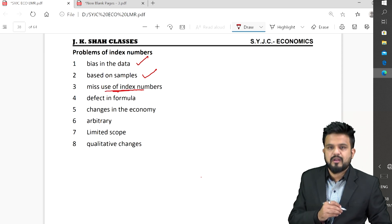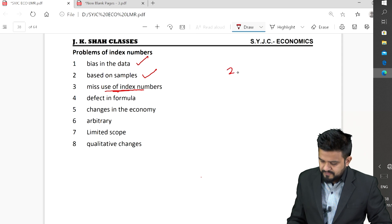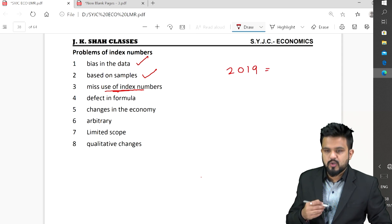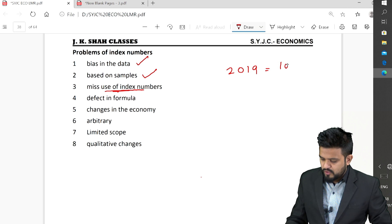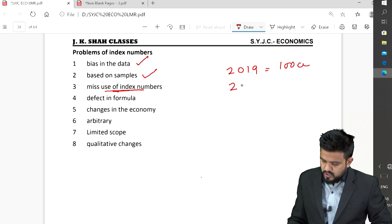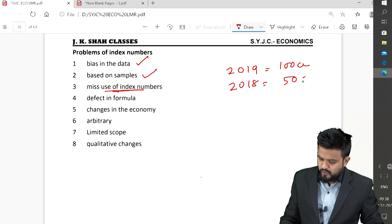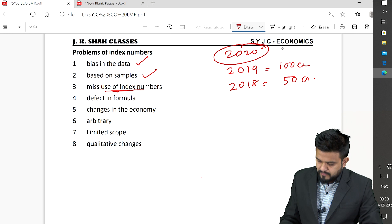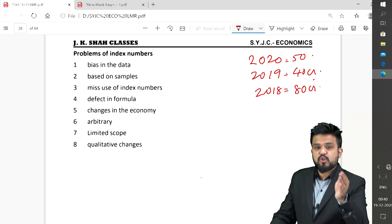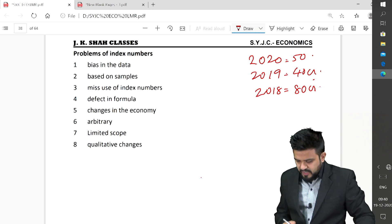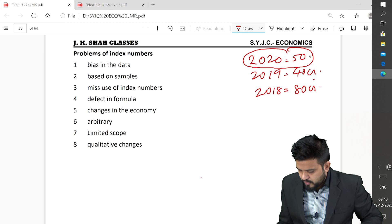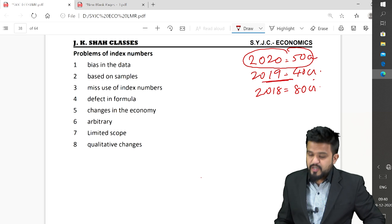Misuse of index numbers. For example, in 2019 profit was 100 crore, 2018 profit was 50 crore, and in 2020. While calculating, misuse of index number, how index number can be misused. Current year company's profit was 50 crore, previous year it was 40 crore.